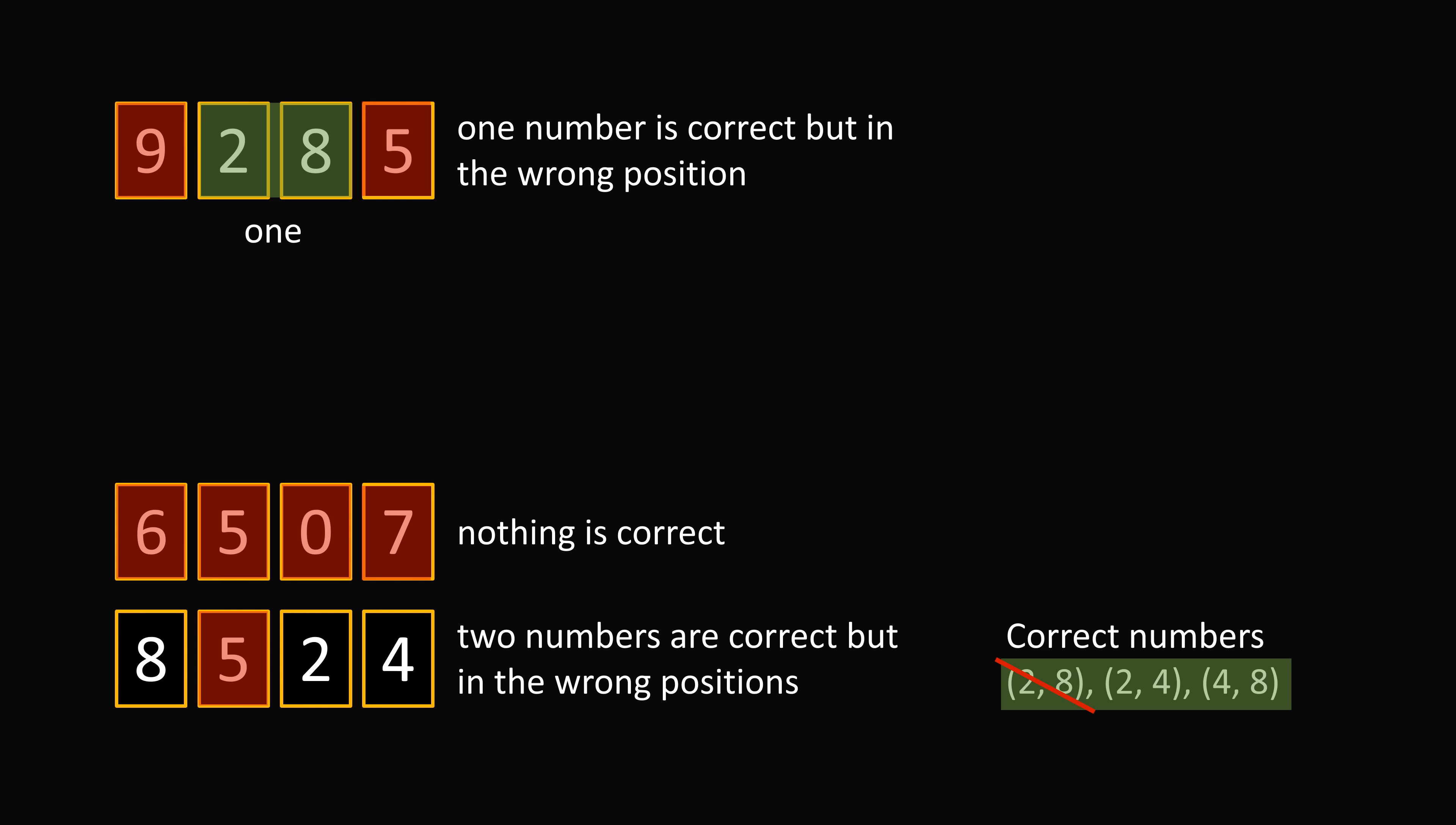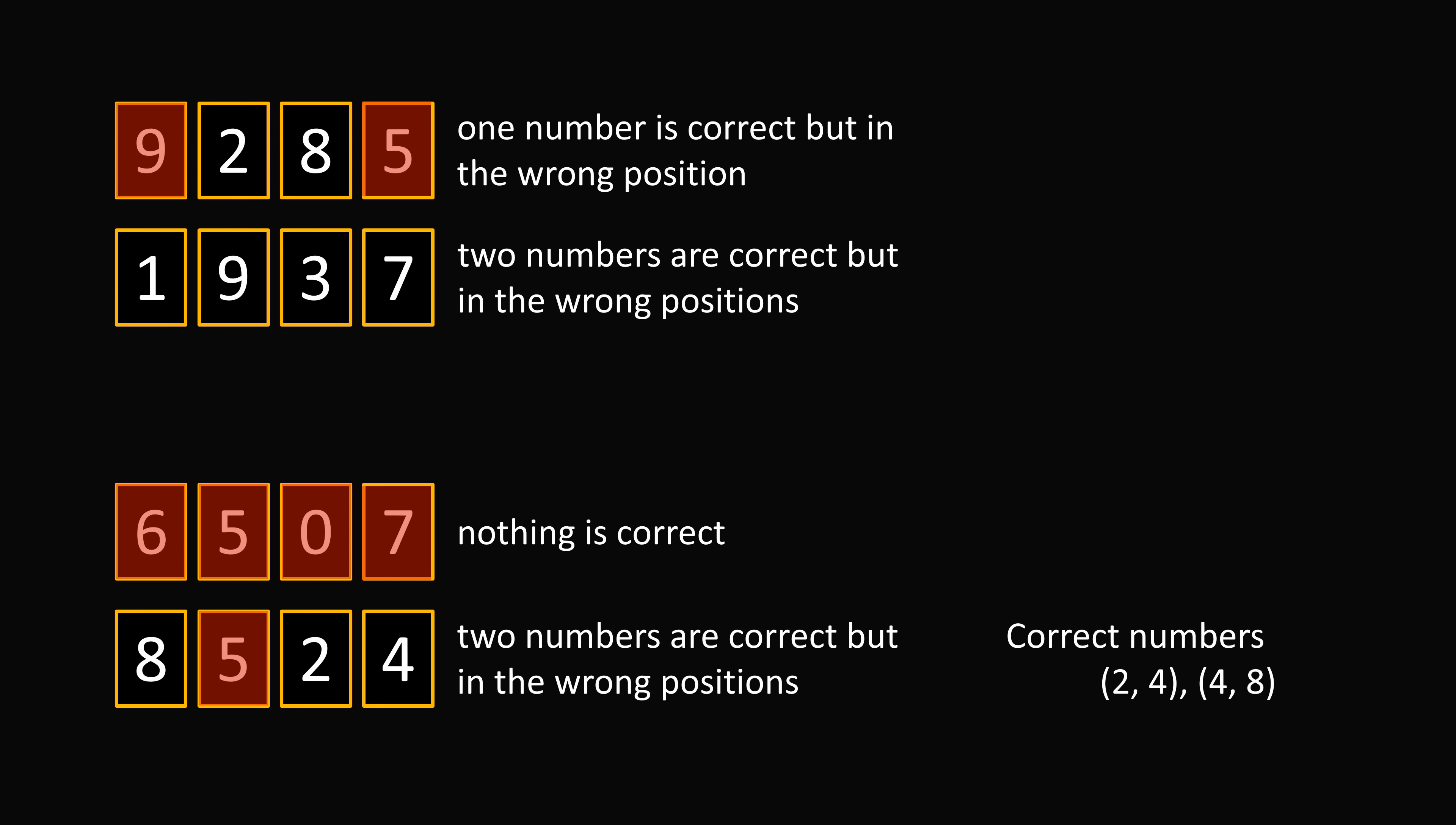So the correct numbers are either 2 and 4, or 4 and 8. Furthermore, 9 is the wrong number. So we'll take this information to the clue, 1937. Now we know 9 is wrong, and we've also figured out that 7 is wrong from before. Now 2 numbers are correct, but in the wrong positions. So that means 1 and 3 must be correct numbers.